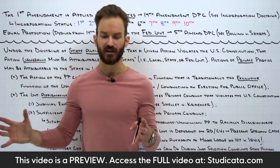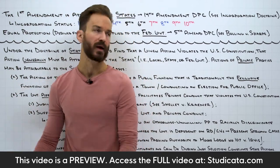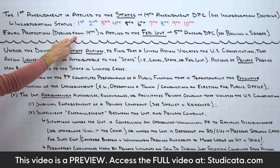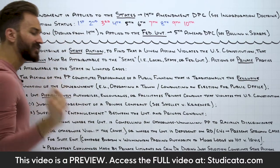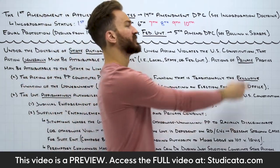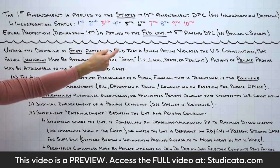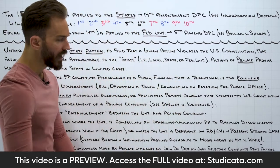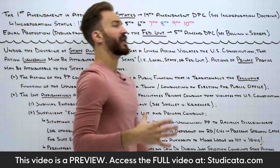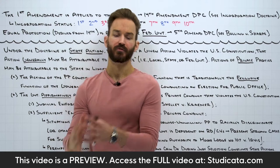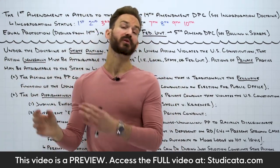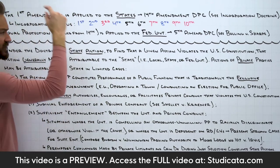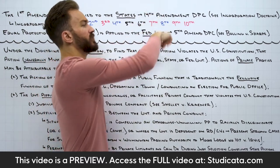The Fifth Amendment — remember, the Bill of Rights at default applies to the federal government — contains a Due Process Clause, just like the Fourteenth Amendment. Through seminal cases like Bolling v. Sharpe, we use the Fifth Amendment Due Process Clause to apply equal protection to the federal government. So all of the protections we're going to go over — freedom of speech, freedom of press, freedom of religion, equal protection, due process both substantive and procedural — all of these apply to the states and to the federal government.